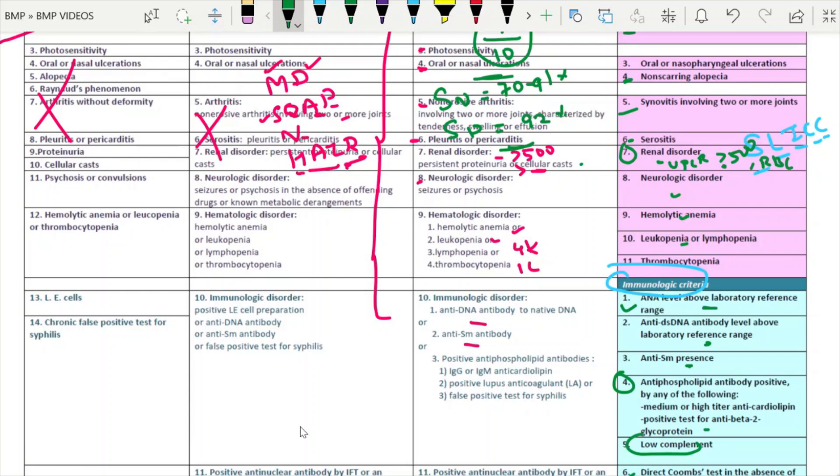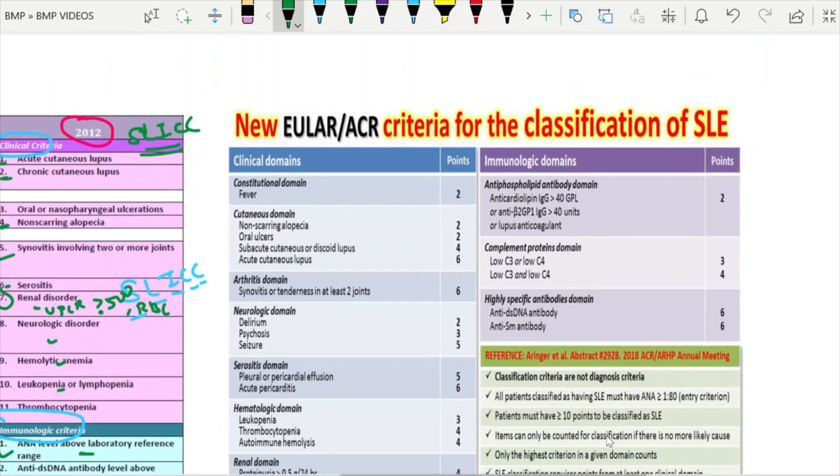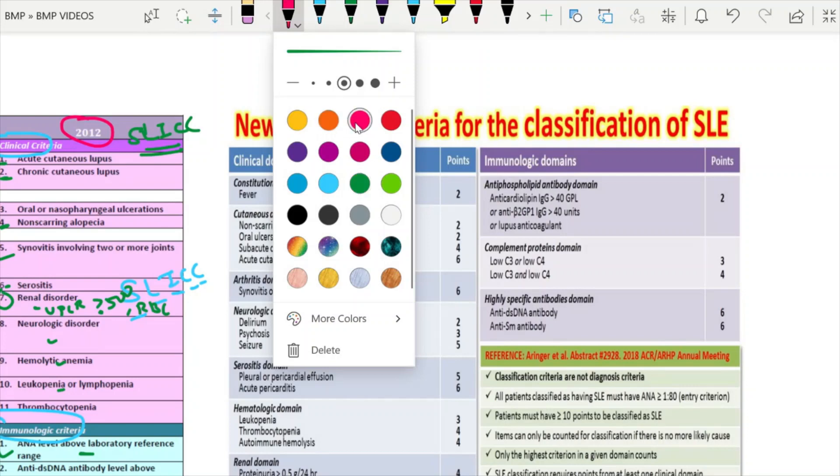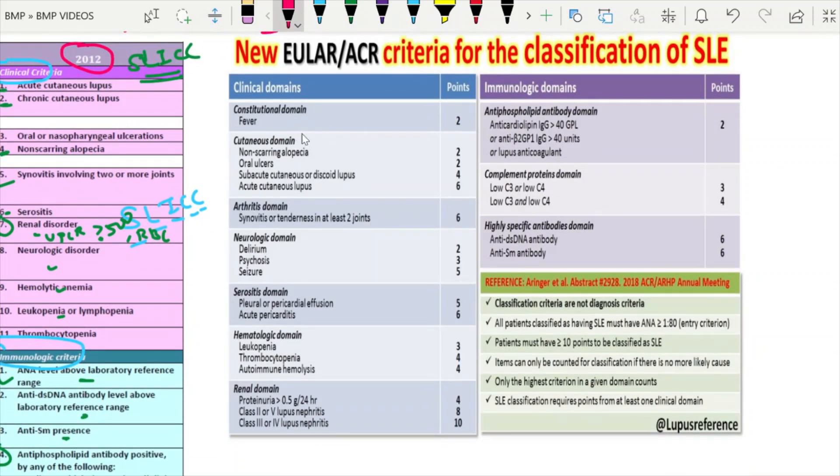Then comes the updated latest one which got published in 2017. This is the latest EULAR ACR criteria for the diagnosis and the classification of SLE. What are the changes they have made compared to the previous? Actually this video was made to discuss this classification criteria. With the previous SLICC, if you are a DM resident for the final exam, all the three criteria have to be in your fingertip because questions will be asked from each and every point of this table.